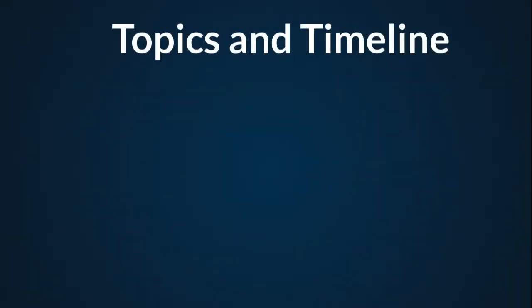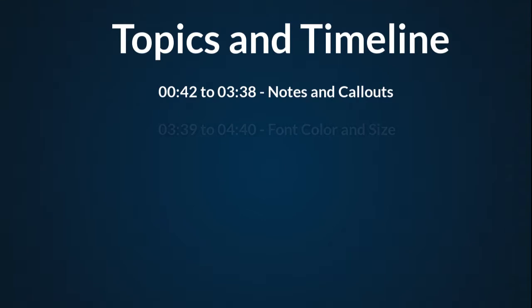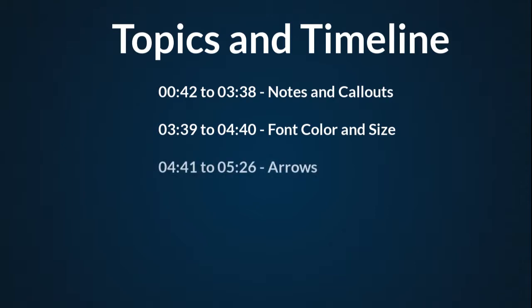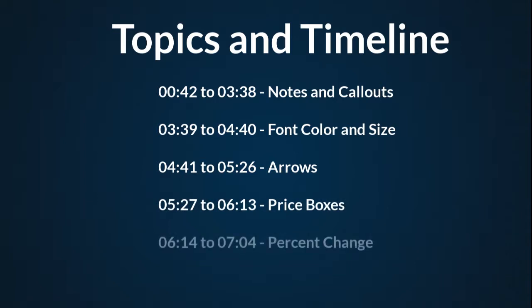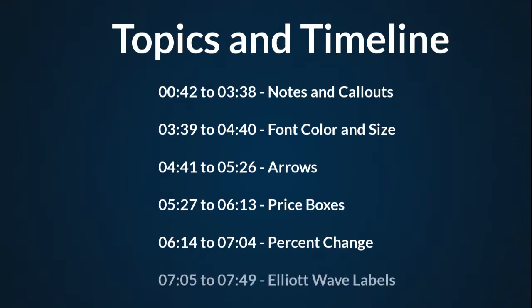Here are the topics and the timeline for today. We'll show you how to add text to your charts using notes and callouts, how to modify the colors and the size of the fonts, how to place arrows on your charts to mark things, how to put price boxes on so you can see price information right on the chart, how the percentage change tool works, and how to put Elliott Wave labels on your charts.